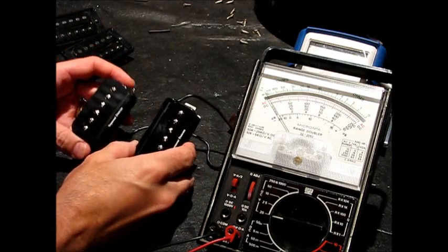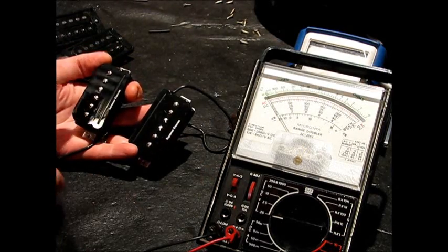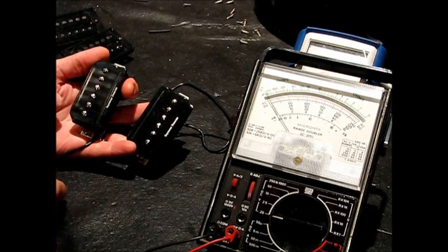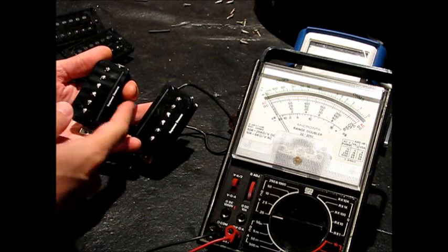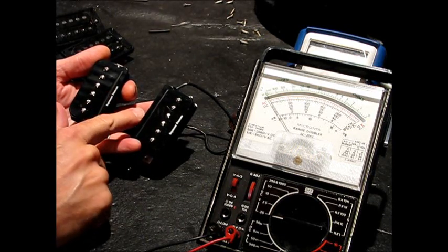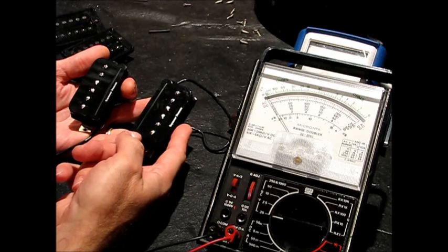Let's start with the Seymour Duncan P-Rails. This is the neck pickup, this is the bridge pickup, and the way they're configured with magnetic polarities: this is a north magnet, the rail is a south, this rail is a north, this P-90 is a south.